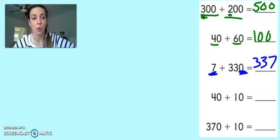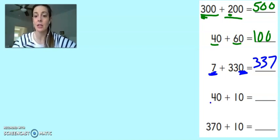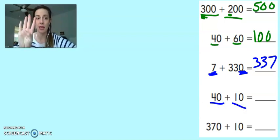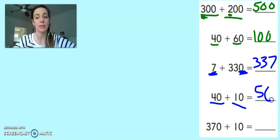The next one is 40 plus 10, so 4 tens plus 1 ten. So 4 tens and 1 more, that's 5 tens. And 5 tens is worth 50.